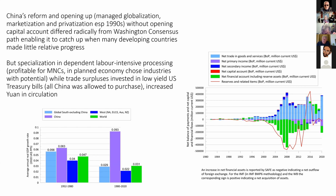The rest of the world, excluding the West, grew at a rate less than the world average. So you can see that while the rest of the developing world fell further behind, China made extraordinary economic progress. In that sense, this process of managed globalization was extraordinarily effective.